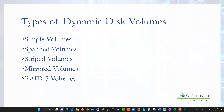With Dynamic Disk you can use several volume types. A simple volume is available with either basic or dynamic disk. Spanned volumes let you take multiple volumes and span them together — similar to RAID 0. A bad thing about a spanned volume is that if a single drive goes bad, the whole volume collapses and you've got nothing. So it doesn't give you any redundancy.